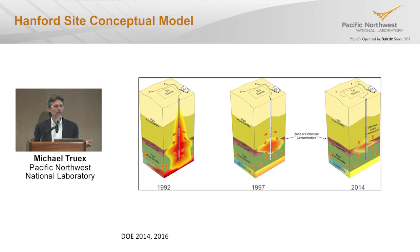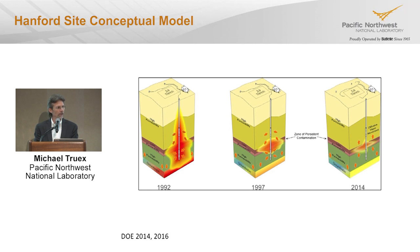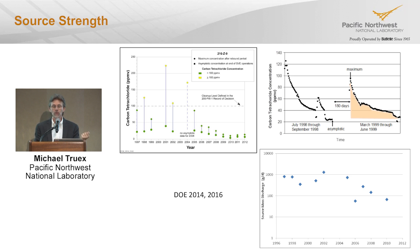We talked about the site conceptual model evolving over time. Back when SVE was started, we discussed what that looked like and how our data pointed to how it had evolved over time — why we think we collapsed the VEDO zone source to a certain area. We also talked about the cyclic nature of pumping: yearly rebound tests and how those told us how the source was changing and how we interpreted that in terms of source strength.